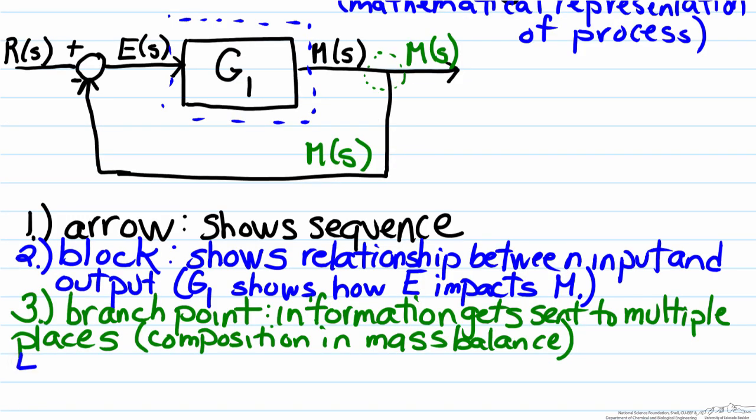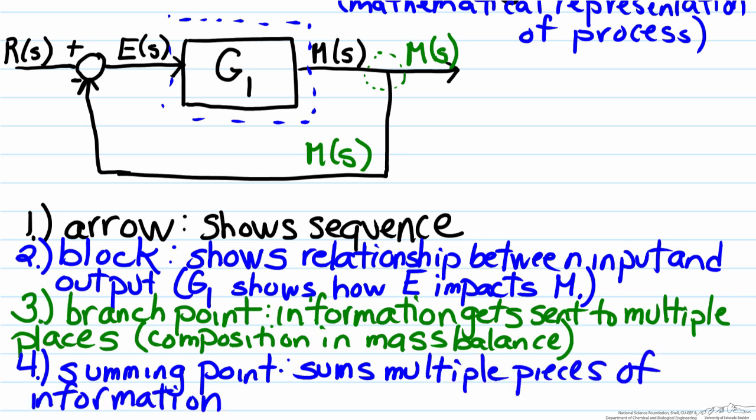This circular element represents the fourth and final important component in a block diagram: the summing point. As the name indicates, it sums multiple pieces of information. Here is our summing point, and you'll notice we have signs at the outside of the circle.